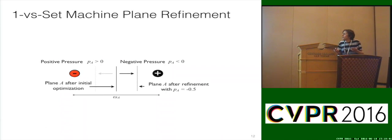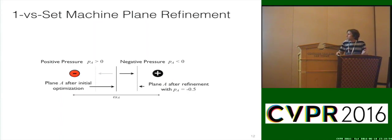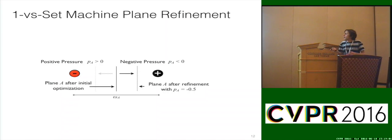We can do further regularization and refine the planes based on points that are far out on the near plane's positive boundary and the far plane's positive boundary — we call this adjusting pressure. We can have positive pressure and negative pressure, and based on those last points, we can move in or out. It's a further way to generalize or specialize given the data situation at hand.